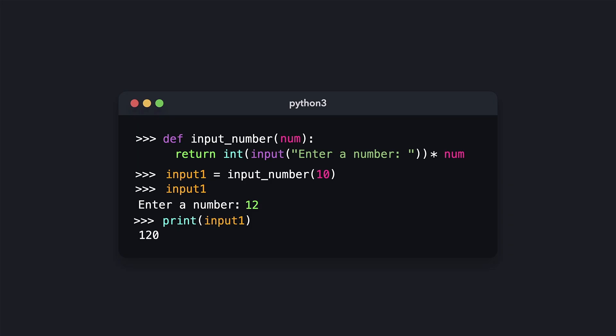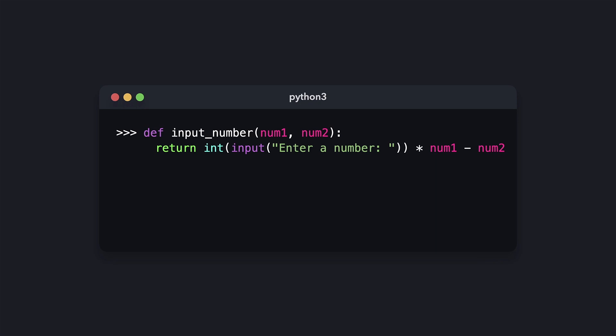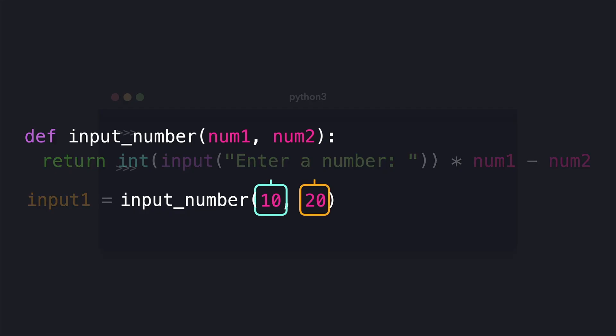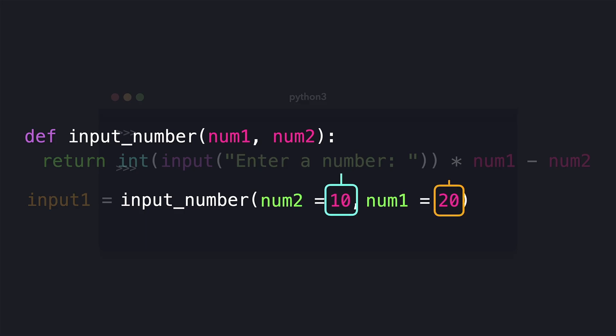The value of input1 is 10 times 12, so 120 in total. A function can also have multiple parameters, all separated by a comma — in that case the position of the arguments matters. The first value passed is the value of num1 and the second is the value of num2. However, if you don't want position to matter, you can pass named parameters explicitly, so that num2 equals 10 and num1 equals 20.